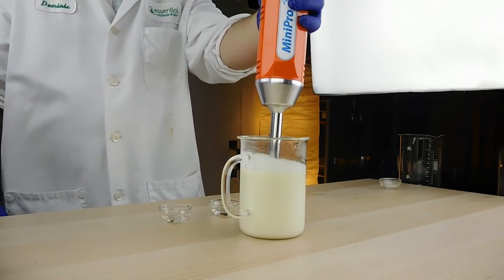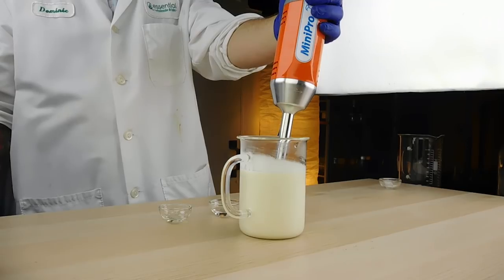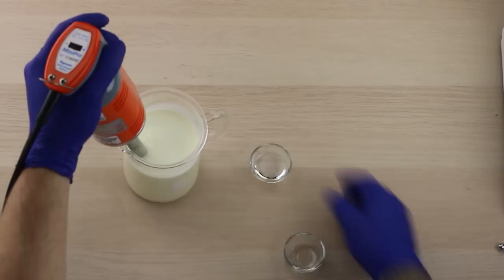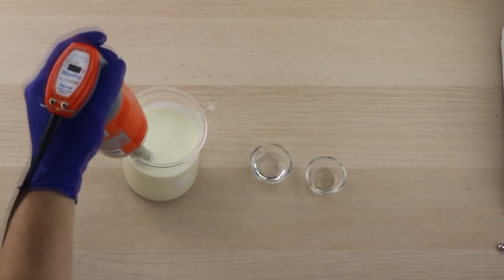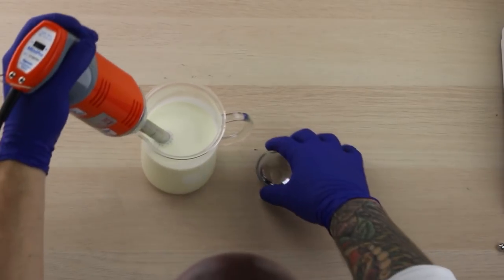Alright. I'm about to add the final phase and I took the temp and it has already dropped down to 124 and it's going to continue dropping as I mix it. Our final phase includes phenoxyethanol and tetrasodium glutamate diacetate, which is the chelator. So let's toss these in there.